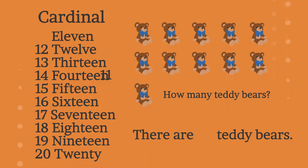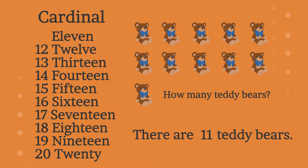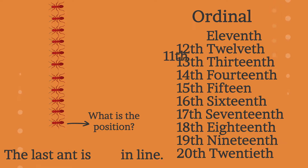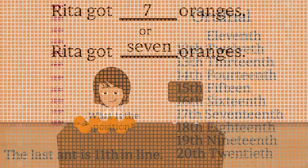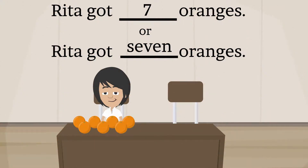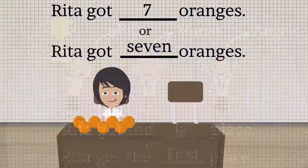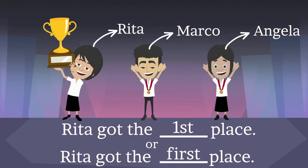Now, we can use it in a sentence if we know if a place is asking by how many things there are, or simply for a certain position. For example, Rita got seven oranges. Rita got the first place.